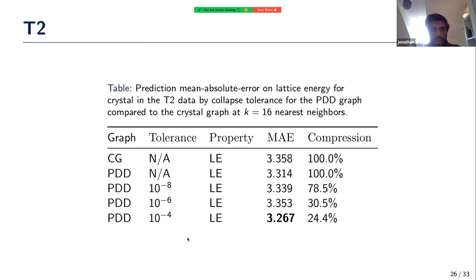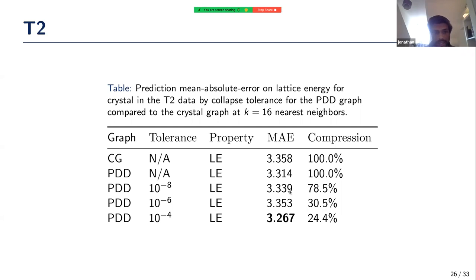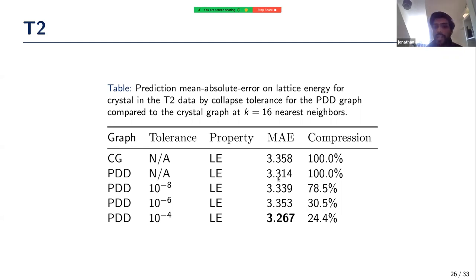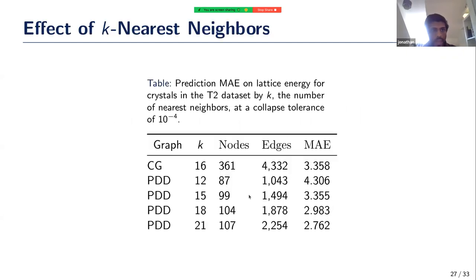Applying this to the T2 dataset, the additional same-species constraint is not a problem because the composition is uniform throughout. Even with a reasonable tolerance of 10 to the negative fourth, we achieve a quarter of the crystal graph's size and our best MAE. This is likely due to preventing overfitting — when very small differences are collapsed, generalization improves, and scores on validation and test sets are better.